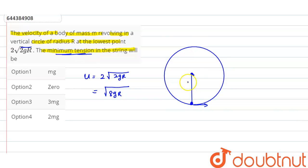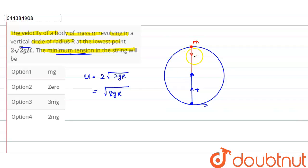We have to find the minimum tension. Let's apply the concept: at the lowest part, assume tension T, and at the topmost part, let's change the color — at the topmost part, the mass m is also present. Assume the tension there as T dash.